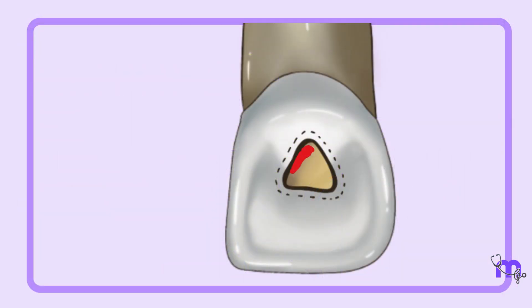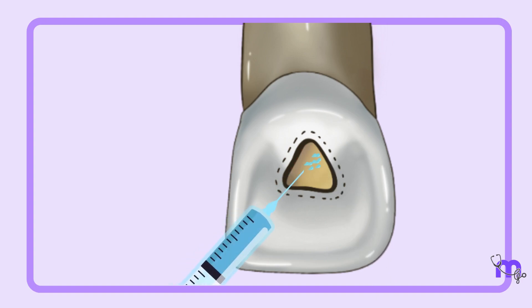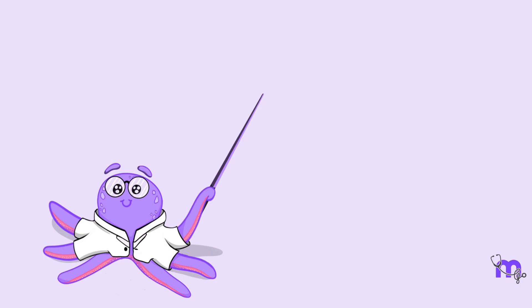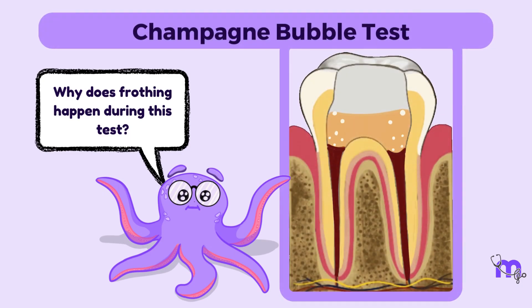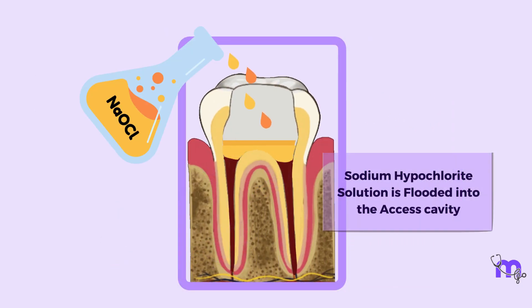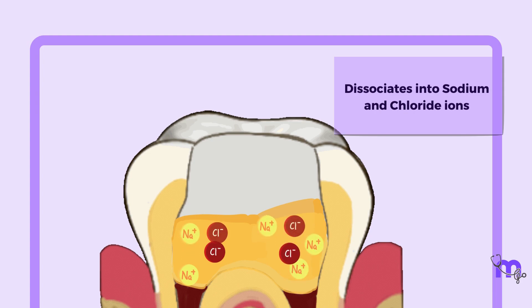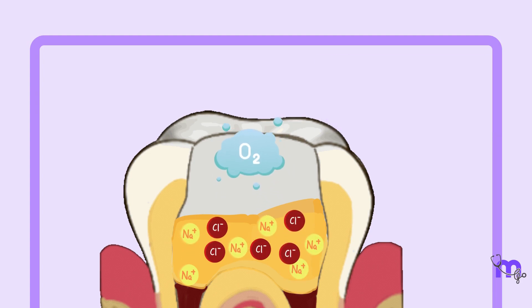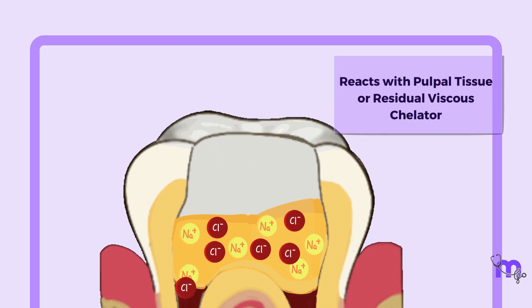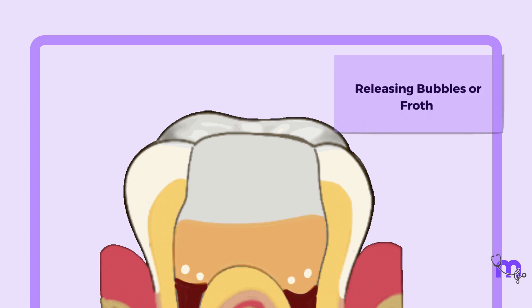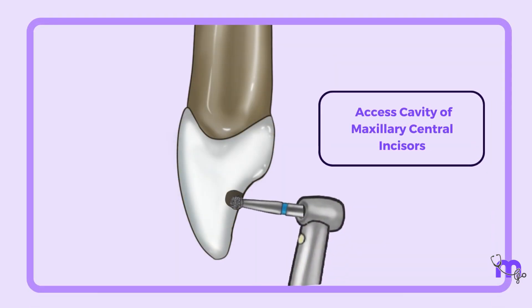During the entire procedure of axis cavity preparation and pulp excavation, I kept irrigating the axis cavity so that no debris was pushed out of the root canal into the peri-apex. Let me also answer a question from our previous session: why does frothing happen in the champagne bubble test? When sodium hypochlorite solution is flooded into the axis cavity, it dissociates into sodium and chloride ions and liberates free oxygen. It reacts with pulpal tissue or residual viscous chelator if used, hence liberating bubbles or froth.